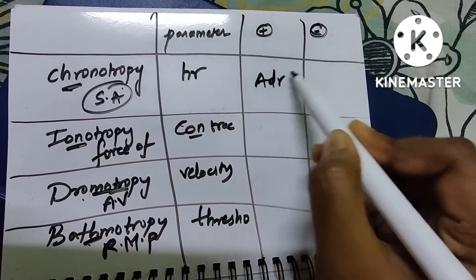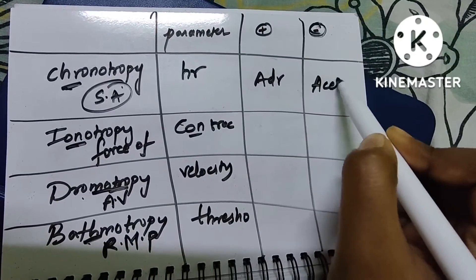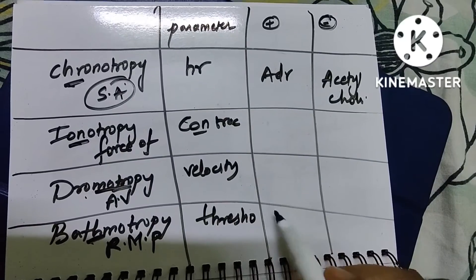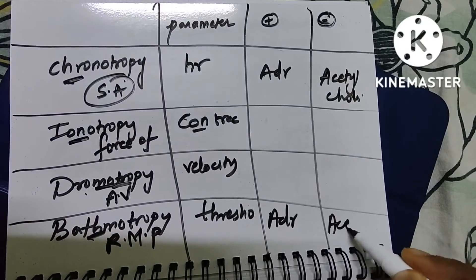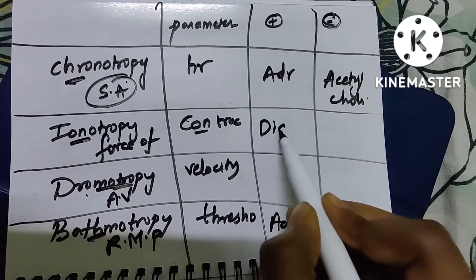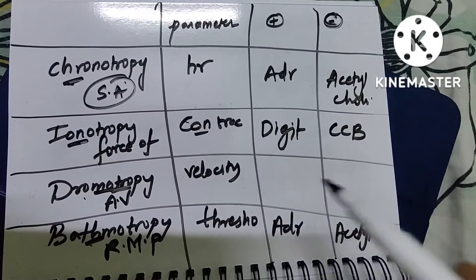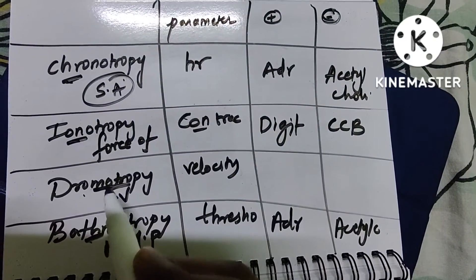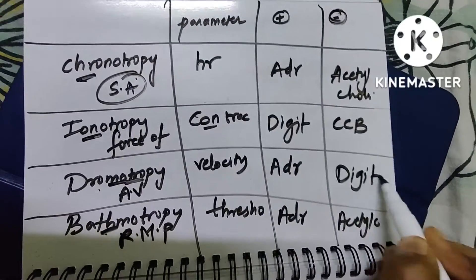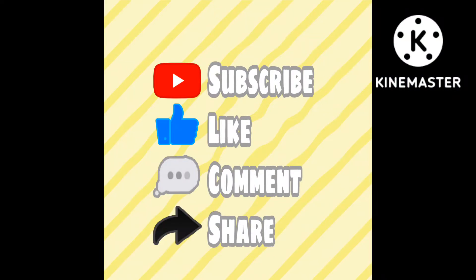Inotropy is force of contraction and bathmotropy is related to resting membrane potential. Positive chronotropy is adrenaline, negative is acetylcholine. Bathmotropy: same — positive is adrenaline, negative is acetylcholine. Force of contraction: positive is by digitalis, negative is by calcium channel blockers. Velocity of impulse: positive is by adrenaline, negative is by digitalis. Take a screenshot of this table. If you like this content, please support by subscribing, liking, sharing, and commenting. Thank you.